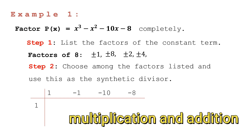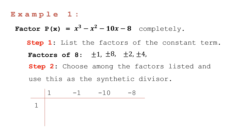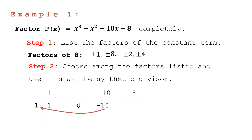Bring down the first coefficient, which is 1. Using multiplication and addition: 1 times 1 equals 1; 1 plus negative 1 equals 0; 0 times 1 equals 0; 0 plus negative 10 equals negative 10; negative 10 times 1 equals negative 10; negative 10 plus negative 8 equals negative 18. The remainder is negative 18.